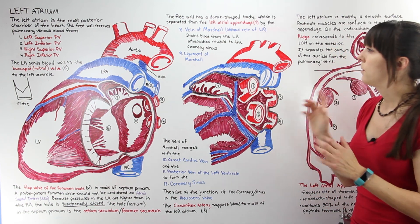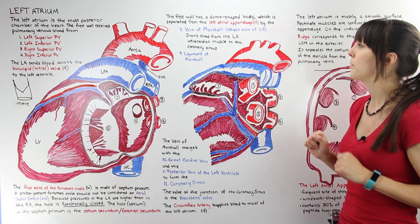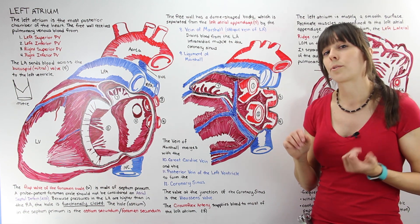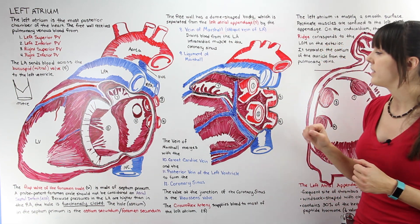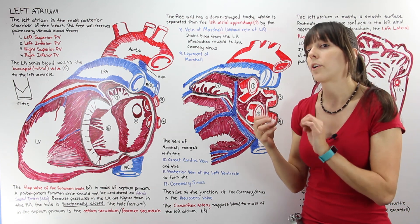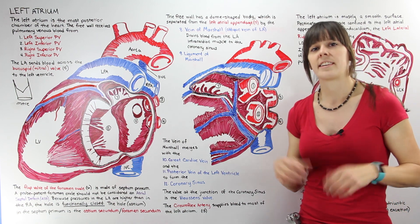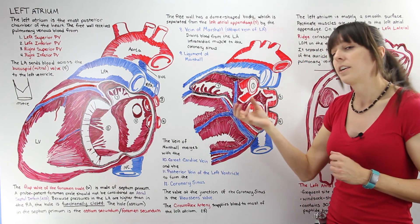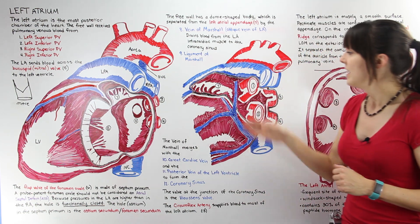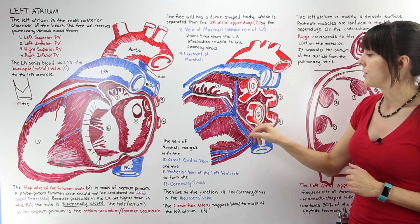A couple of veins particularly relevant to the left atrium are worth discussing. The vein of Marshall — also called the oblique vein of the left atrium — is the blue structure shown here. It drains blood from the left atrium's intracardiac muscle to the coronary sinus. The heart itself needs a blood supply, so this vein is not draining blood from inside the left atrium but rather from the tissue that makes up the left atrium itself, and it drains into the coronary sinus.